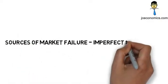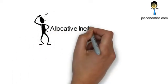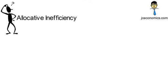Sources of Market Failure – Imperfect Information. When decisions are made with imperfect information, resources may be misallocated, resulting in allocative inefficiency.